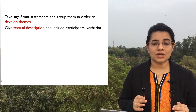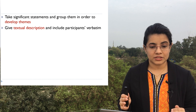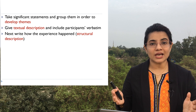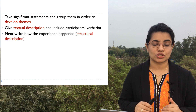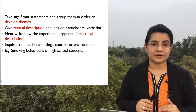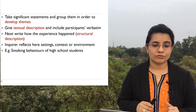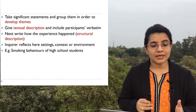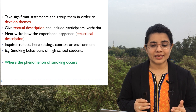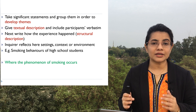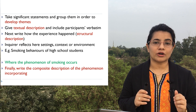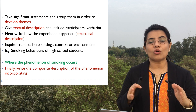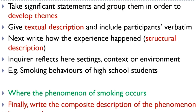You can give a textual description and include participants' verbatim voices. Write how the experience happened — that means the context and structural description, including the setting of the research. For example, the phenomenon of smoking behavior in high school students: the phenomenon is smoking and the setting is where the smoking occurs. Finally, write a composite description of the phenomenon incorporating both the participants' voices and the structural description of the setting, then combine all those elements to arrive at similar categories.